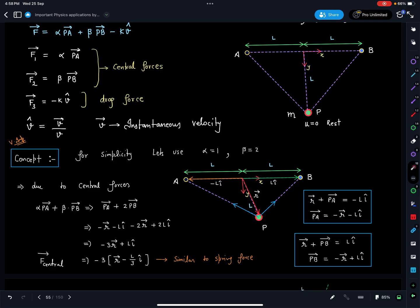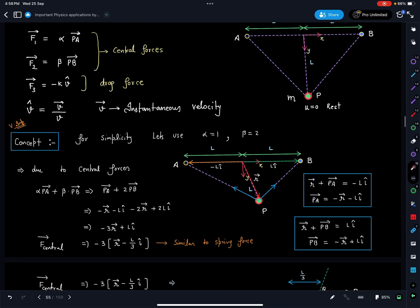So here I can say this is minus L i cap and this is plus L i cap, position vectors of points A and B. Using this vector triangle, I can calculate here: r plus PA is minus L i cap, and similarly r plus PB is L i cap. From here, PA is known to me and PB is known to you. This is minus r vector minus L i cap, and PB becomes minus r plus L i cap. Now when I substitute these values here, I am getting the contribution of this central force as minus 3r plus L i cap.